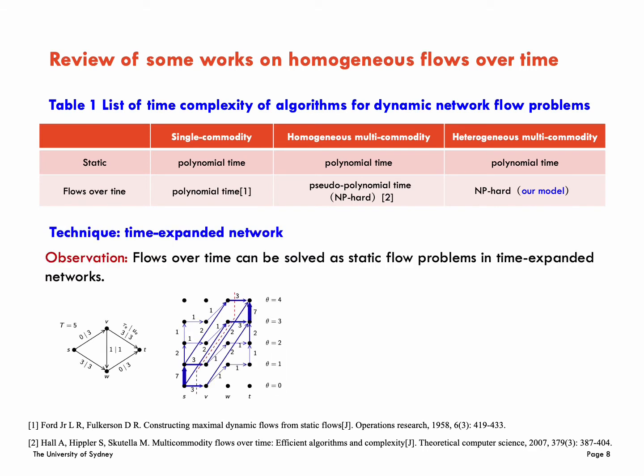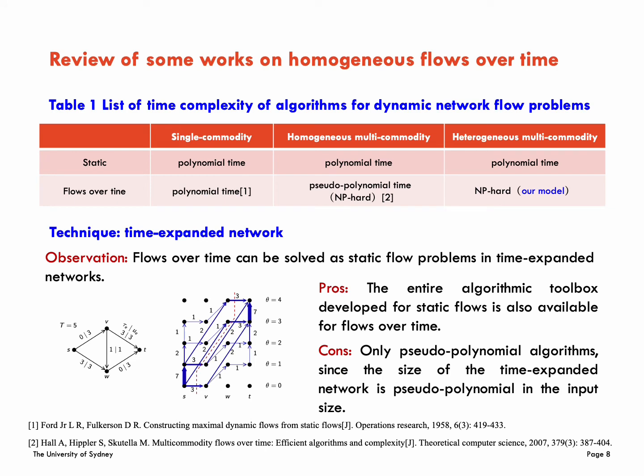A classical technique to solve homo-problem is to construct time-expanded networks. It replicates T copies of v. Then for each edge in the original graph with transit time tau, connect the corresponding nodes in the i-th layer and the i plus tau-th layer. So then flows over time can be solved as static flow problems in time-expanded networks. But the cost is this algorithm is only pseudo-polynomial since the size of the time-expanded network is pseudo-polynomial in the input size.